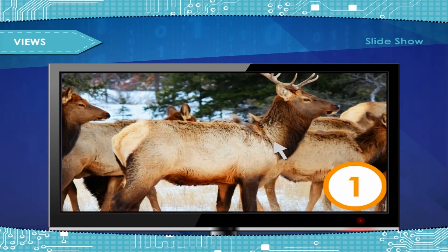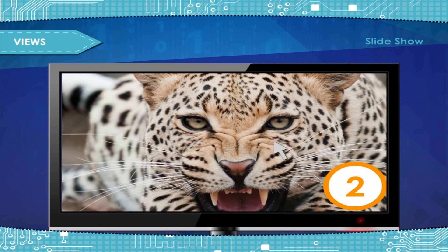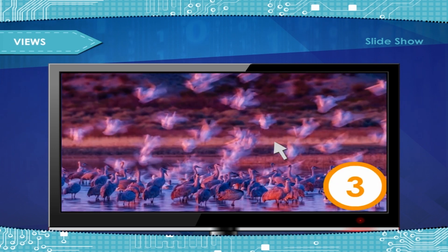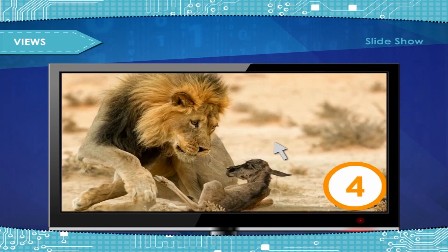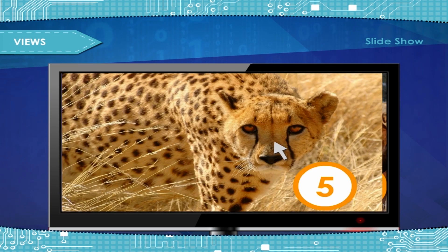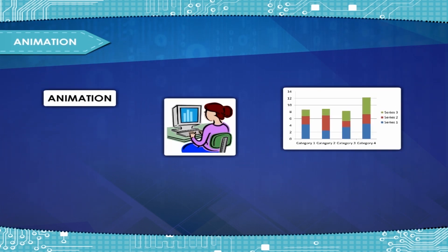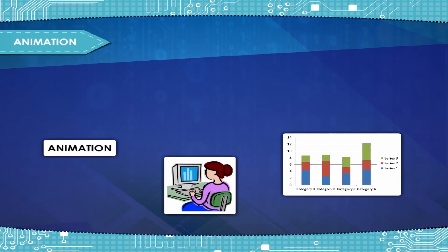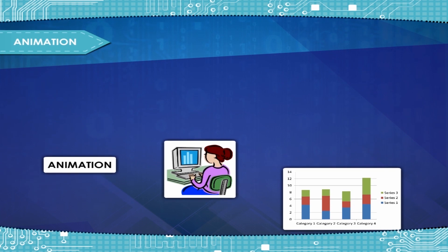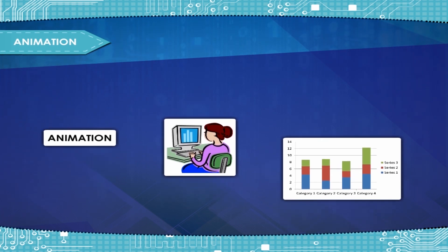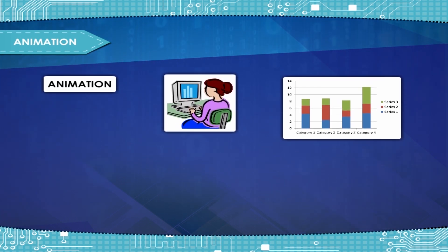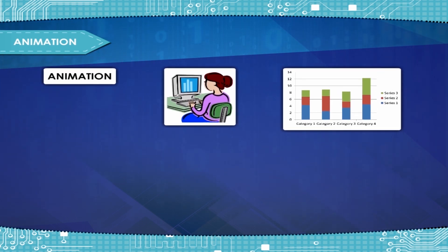However, clicking on the Slide Show button will begin the show from whichever slide is currently displayed for editing. Animation is the ability to move your objects — like text, graphics, charts, and logos — in all directions of the slide.